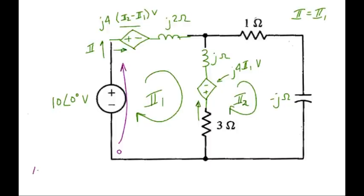So I'll begin down here. So on mesh 1, we encounter negative sign first, so that's minus 10. Going through this device, we encounter positive sign first. The voltage source value is J4, I2 minus I1. Continuing through this device, we have the impedance J2 times the mesh current I1.